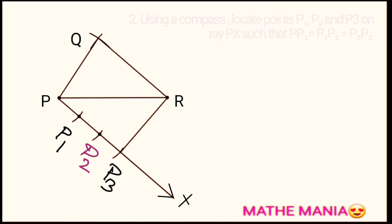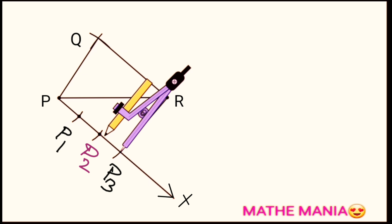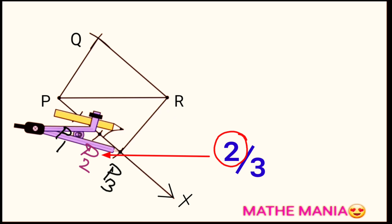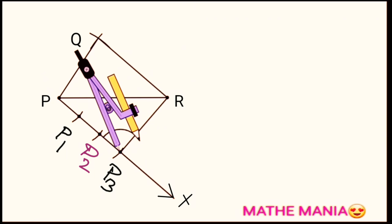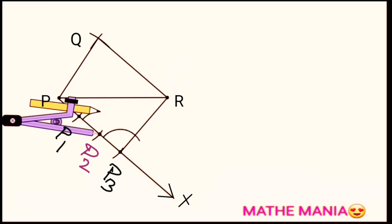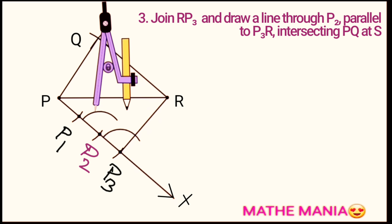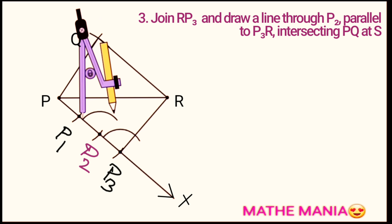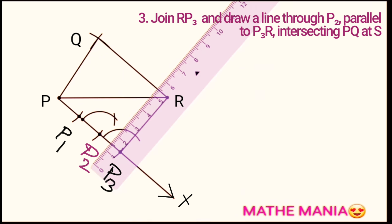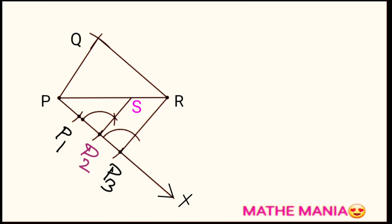Have you constructed ray PX and cut three equal arcs on it, getting points P1, P2, P3, and joined P3 to R? Good. Next we are going to draw an angle equal to angle P3R at point P2, because through P2 we have to draw a line parallel to P3R. Taking a small radius centered at P3, draw an arc intersecting angle P-P3-R; with the same radius and center at P2, draw another arc. Then measure the two endpoints of the first arc and mark the second arc, intersecting it, then join P2 to the point of intersection and extend it to intersect line segment PR at point S.